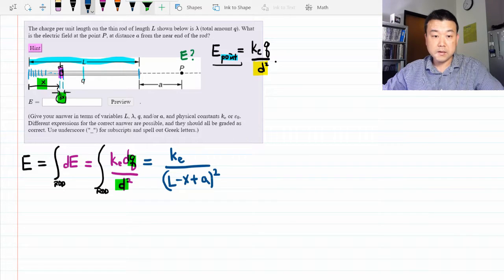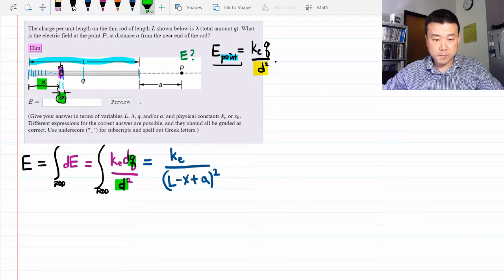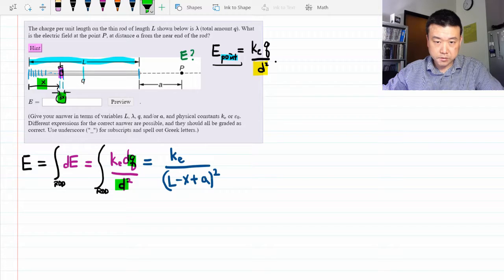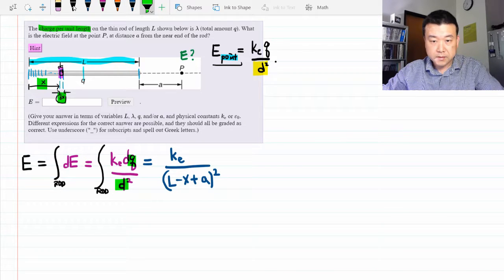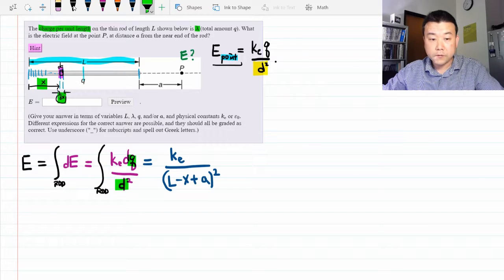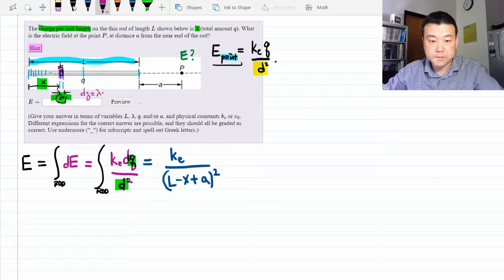And the infinitesimal amount of charge dq, that's the harder one. But I can read in the question where it says charge per unit length is lambda. So if I have some length, then the amount of charge, it makes intuitive sense to me, should be the charge per length times the length.